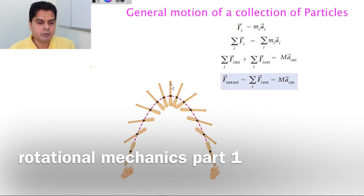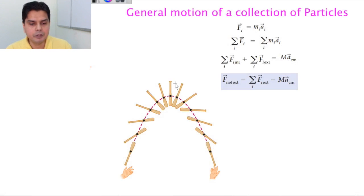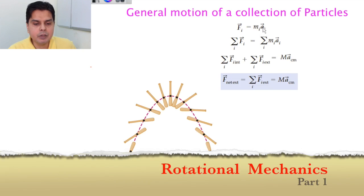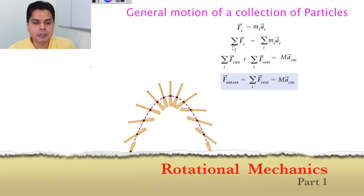Today we are going to study the general motion of a collection of particles or a rigid body. In the chapter on center of mass, we saw that for a collection of particles each of mass m_i, when we write Newton's second law for each particle we get f_i = m_i * a_i. Summing over all i, we get: summation of f_i equals summation of m_i * a_i.